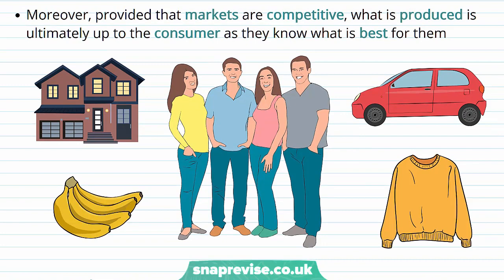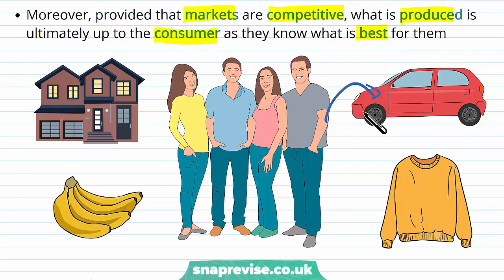If we think about our economic agents and households specifically, markets are competitive. What is produced is ultimately what the consumer wants, and they know what they want as they know what is best for them. All of the goods a household demands are going to be specific exactly to what people want, as opposed to anybody else dictating to economic agents what they need. The people themselves direct business into what they demand and therefore influence what is supplied.